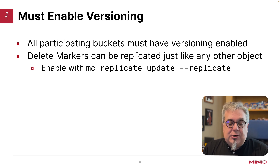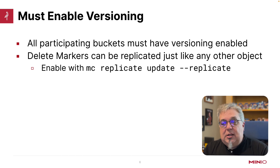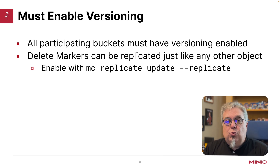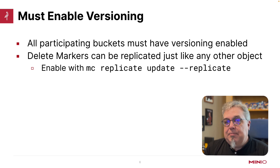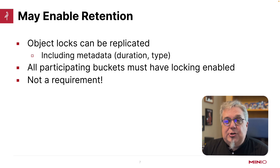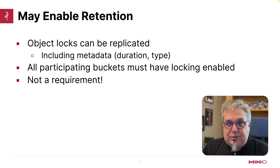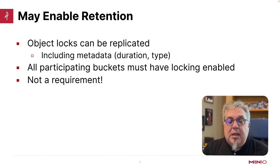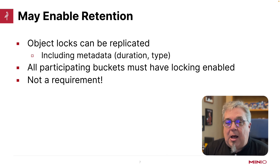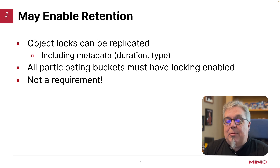When you are doing versioning replication, one of the things that can get replicated is delete markers. You can change what gets replicated by using the replicate flag on the MC replicate command. If you have retention enabled, you can replicate object locks. This includes all the metadata, like the duration, the type, if I'm doing a legal hold, etc. All participating buckets have to have locking enabled and need to have the same locking policies as well. It is not a requirement to have retention enabled in order to do replication — the two are independent, but they do work together.